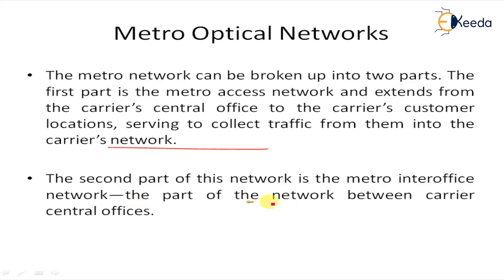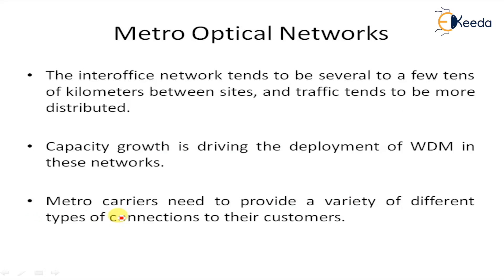The second part of this network is the metro interoffice network, which is the part of the network between the carrier's central offices. The access network today typically consists of rings a few kilometers to a few tens of kilometers in diameter, and traffic is primarily hubbed into the central office. The interoffice network tends to span several to a few tens of kilometers between sites, and traffic tends to be more distributed.